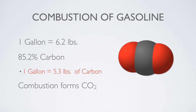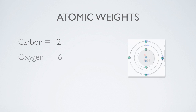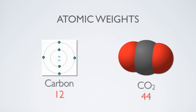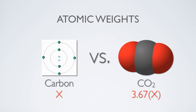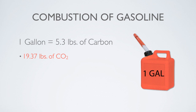You may remember from chemistry class that the atomic weight of carbon is 12, and the atomic weight of oxygen is 16. Thus, the combined weight of one carbon atom and two oxygen atoms is 44. So, the ratio of carbon to carbon dioxide by weight is 12 to 44. In other words, carbon dioxide weighs 3.67 times as much as carbon. So, what does all this mean for our gallon of gasoline? Well, what started out as 5.3 pounds of carbon in the gallon of gasoline turned into 19.37 pounds of carbon dioxide after combustion.